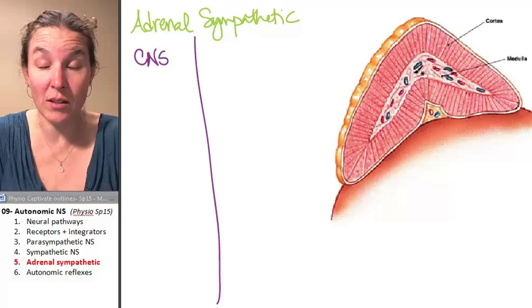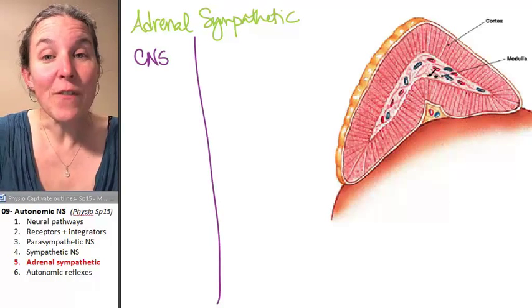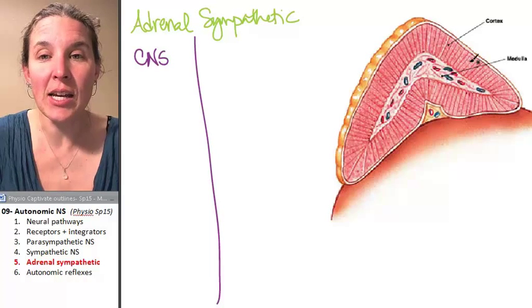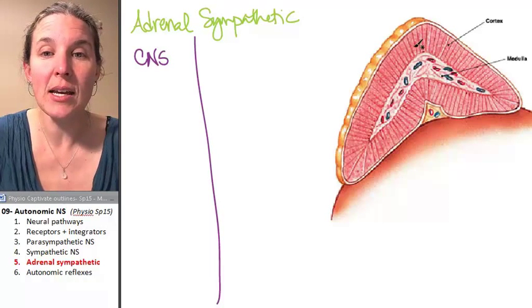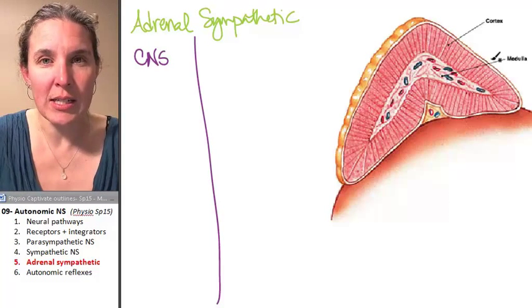It involves the adrenal glands. The adrenal glands sit on top of the kidney. If you were to slice an adrenal gland in half, you would see that it has an outer cortex and an inner medulla. The cortex is actual endocrine tissue.